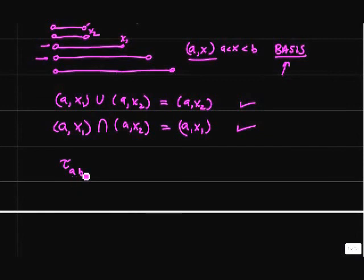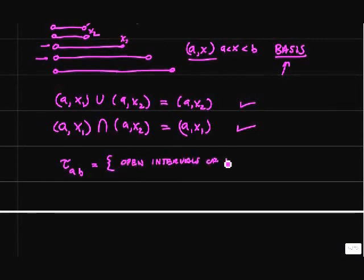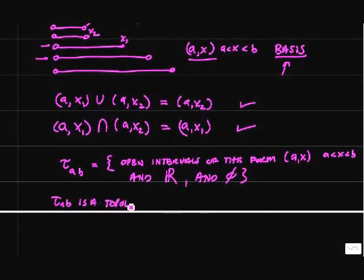The topology we get this way, I'll call topology AB — it's the topology on the open interval A to B. It consists of the open intervals of the form AX, where X is between A and B. Combined with the whole real numbers and the empty set, we have a topology on the real numbers.